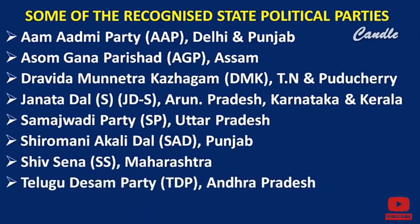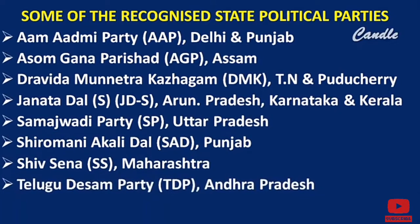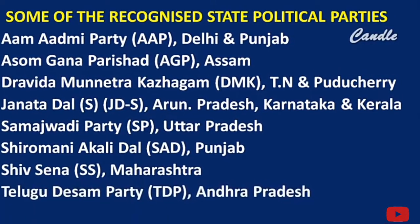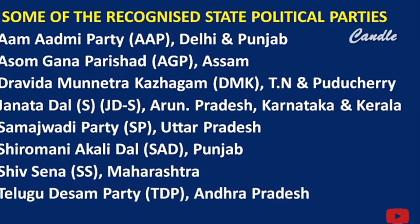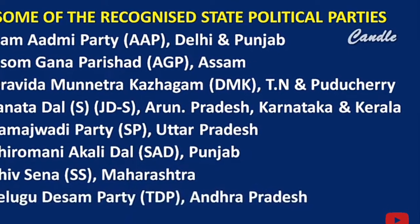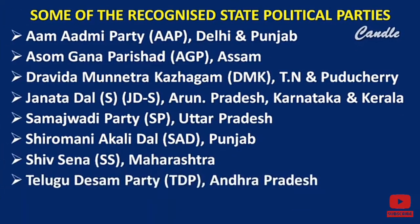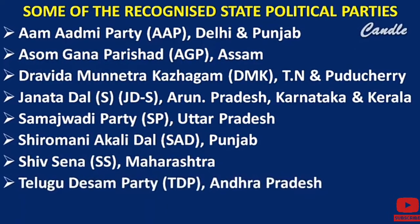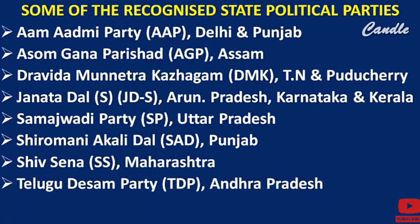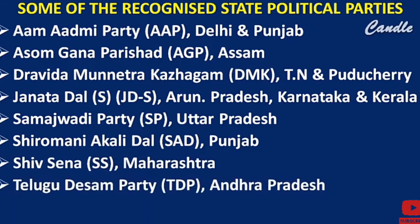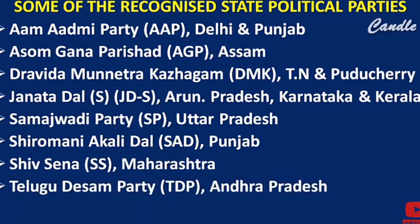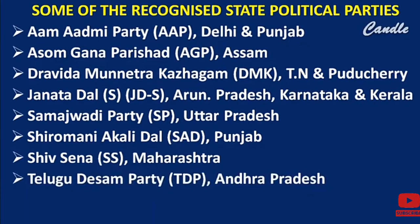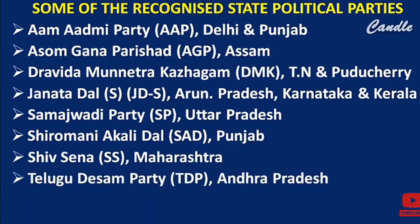Here you can see some of the recognized state political parties. Aam Aadmi Party, also called AAP, is in the states of Delhi and Punjab. Then we have Asom Gana Parishad in the state of Assam. Then DMK in the state of Tamil Nadu and Puducherry. JDS in the states of Arunachal Pradesh, Karnataka and Kerala.